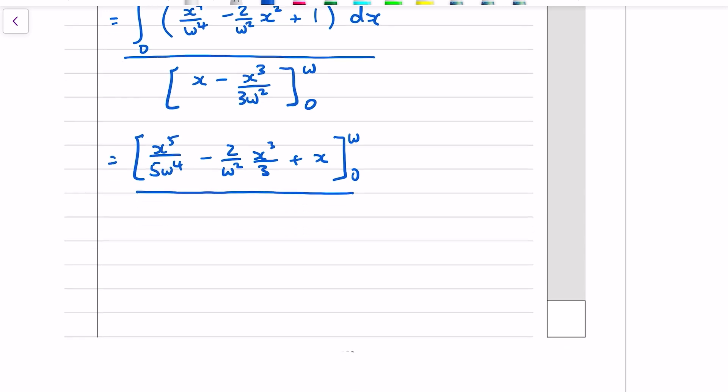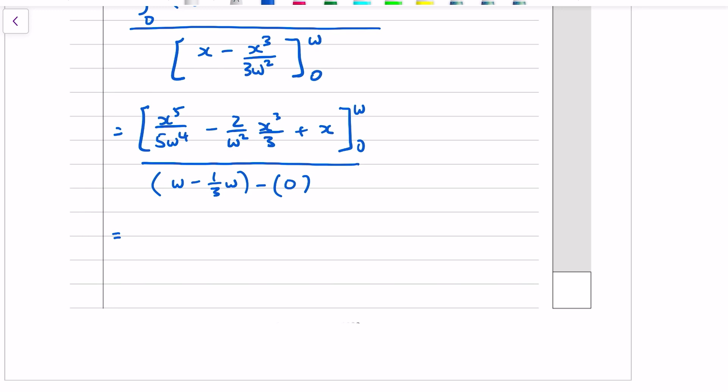The denominator. And when we sub in, we get w minus a third of w. Subbing in zero into the x's, we get zero. Okay, and now the numerator for the other integral. Sub in w, we get a fifth of w. Sub in w into the second term, we get minus two thirds of w. And then the last term, w, likewise we get zeros. And then a fifth minus two thirds plus one comes out to be eight fifteenths w all divided by two thirds w. The w's cancel, which is quite nice. And when we simplify that, we get four fifths.